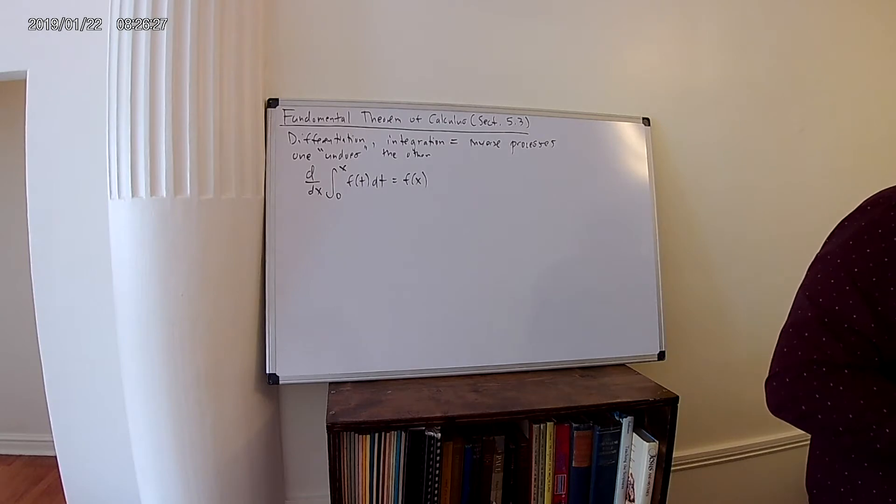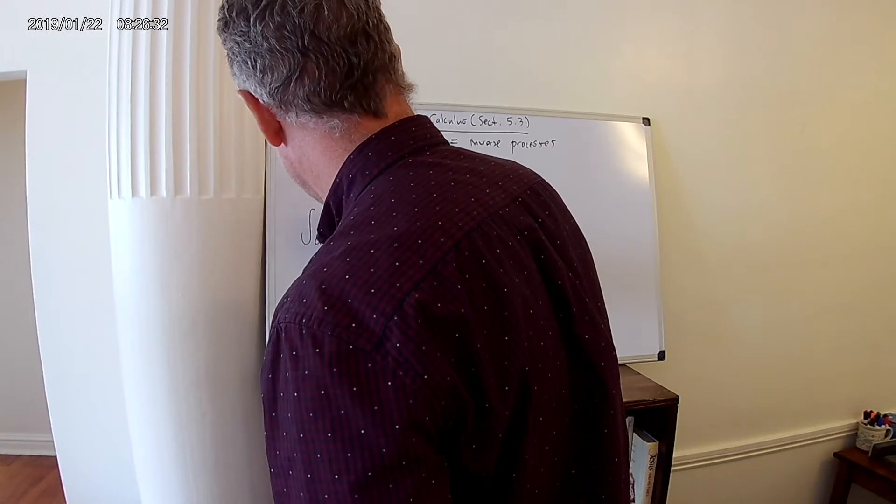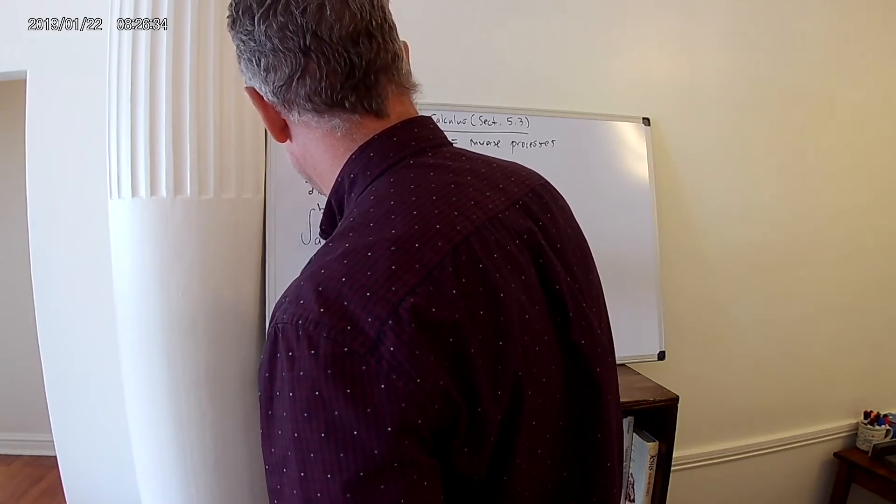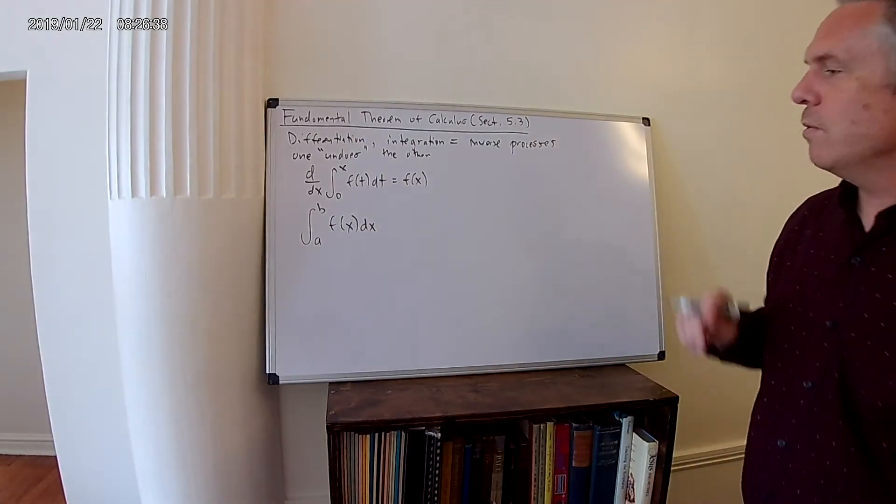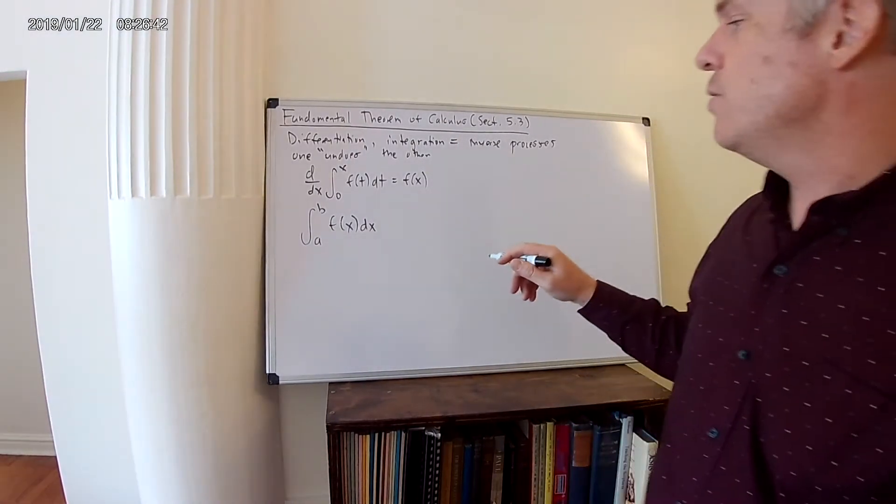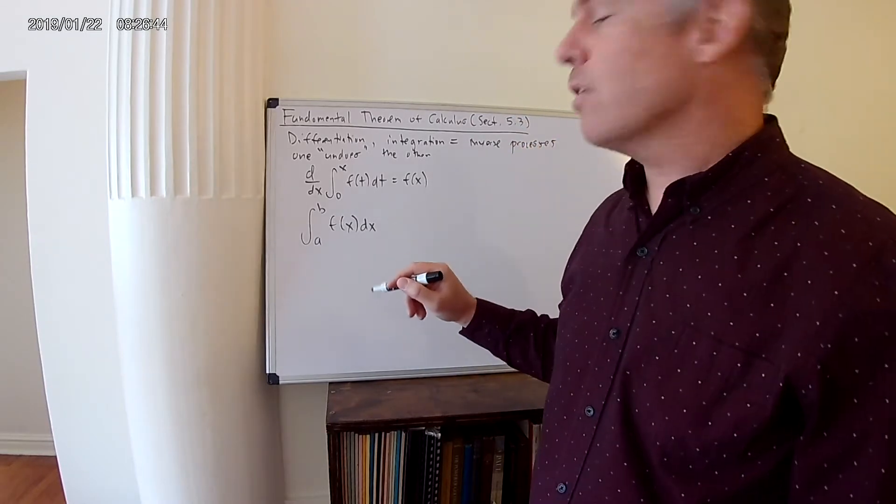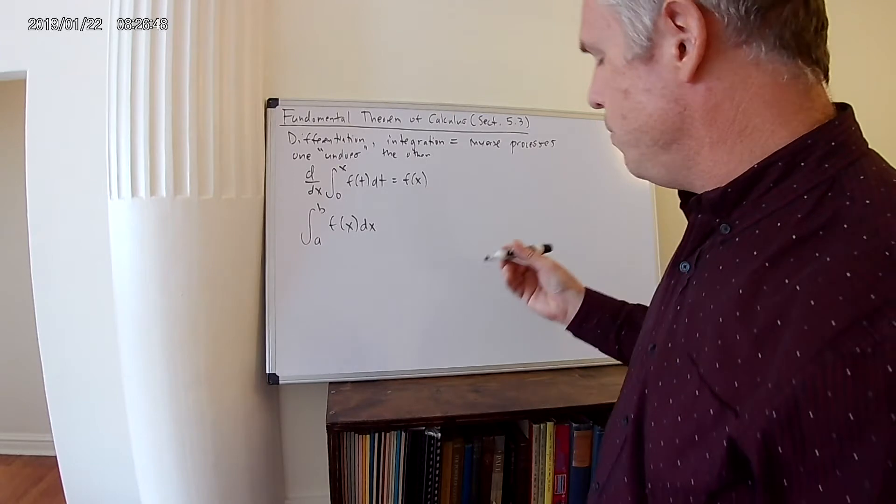And that brings us to the fundamental theorem of calculus. If you're integrating, let's suppose you're doing a definite integral of a function. What does this mean? It means I'm finding the exact area under the curve, under this function, from the point a to point b.